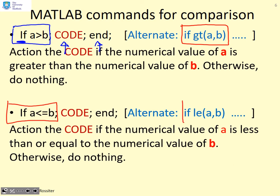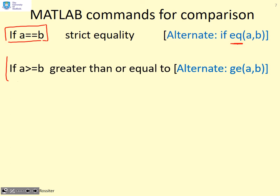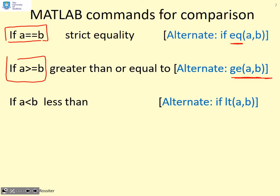There are a number of alternatives. You can check for strict equality with 'if a == b' — notice the use of two equal signs together; MATLAB interprets this as comparing a to b and asking if they are the same. Alternatively, you can write 'if eq(a, b)'. You can also do 'if a >= b', with the equivalent 'ge(a, b)', and 'if a < b', with the equivalent 'lt(a, b)'.